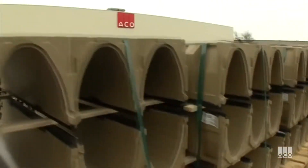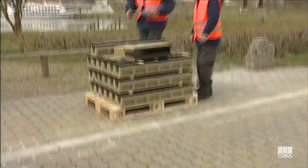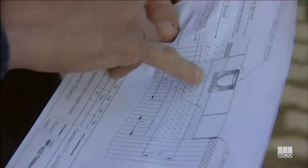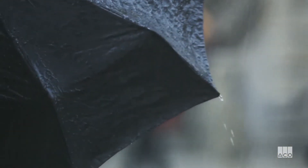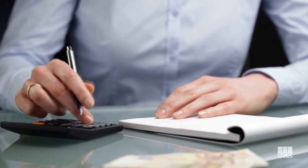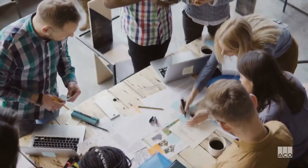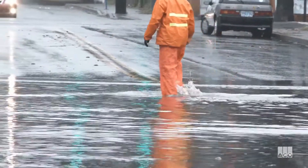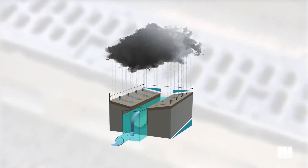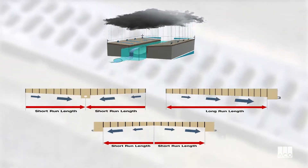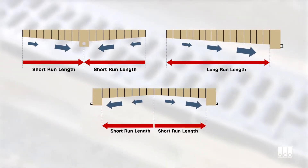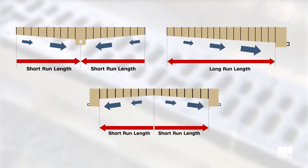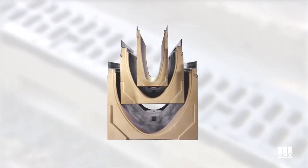The size of a trench drain is driven by the hydraulic performance of the underlying channel with respect to the catchment hydraulics of a site, and this depends on the amount of rainfall surface runoff that needs to be drained. A site's catchment hydraulics is calculated by the amount of rainfall and the area to be drained. The performance of the drain is influenced by the topography of the site, the run length or spacing of the outlets, the run configuration, as well as by the design of the drain itself.